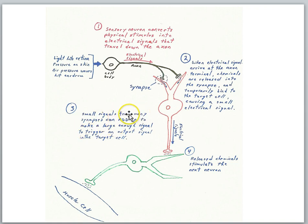So the small signals from many synapses can add up to make a large enough signal to trigger an output signal in the target cell. So if this target cell gets enough activity at its synapses, enough of these small electrical signals can add up to reach a threshold, then this cell will generate its own electrical signal and that will proceed down the axon to its own terminal and chemicals will be released here onto the next neuron in the chain.